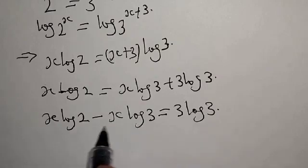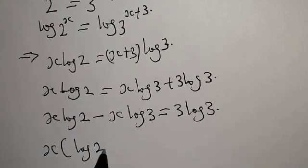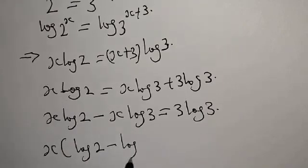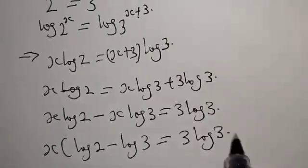x log 2, x log 3. Something is common here, x is common. We can factor it out. x times log 2 minus log 3 is equal to 3 log 3.